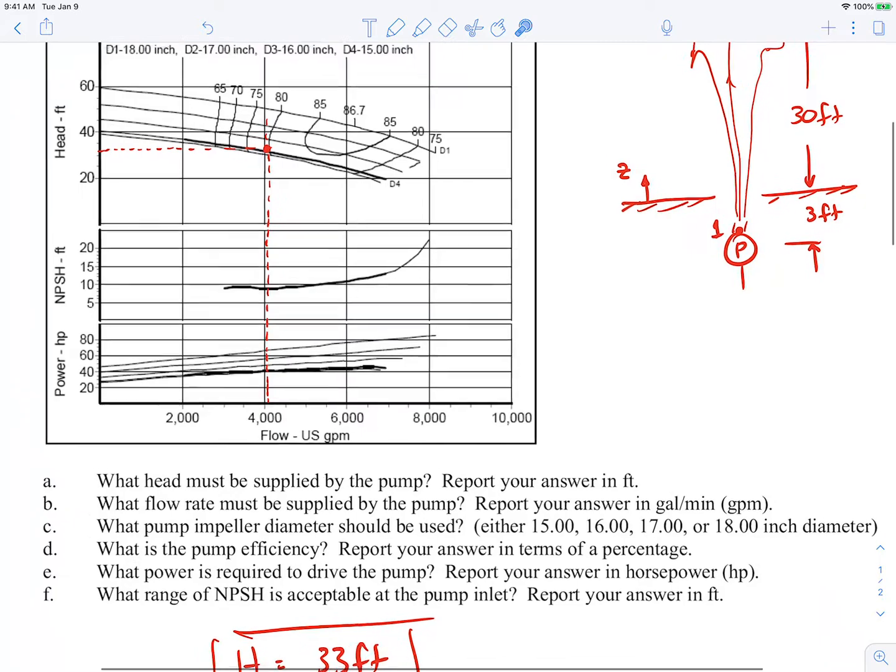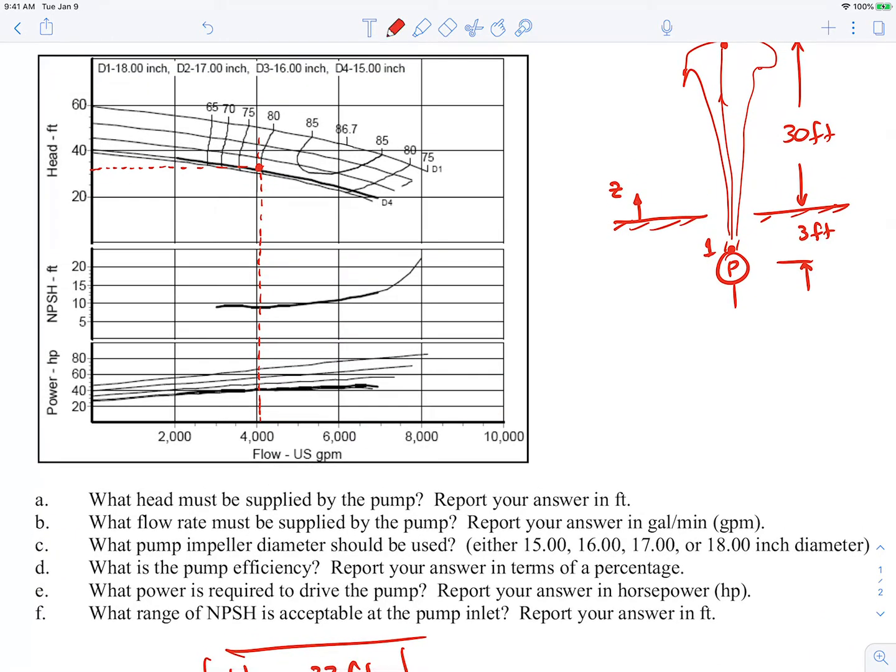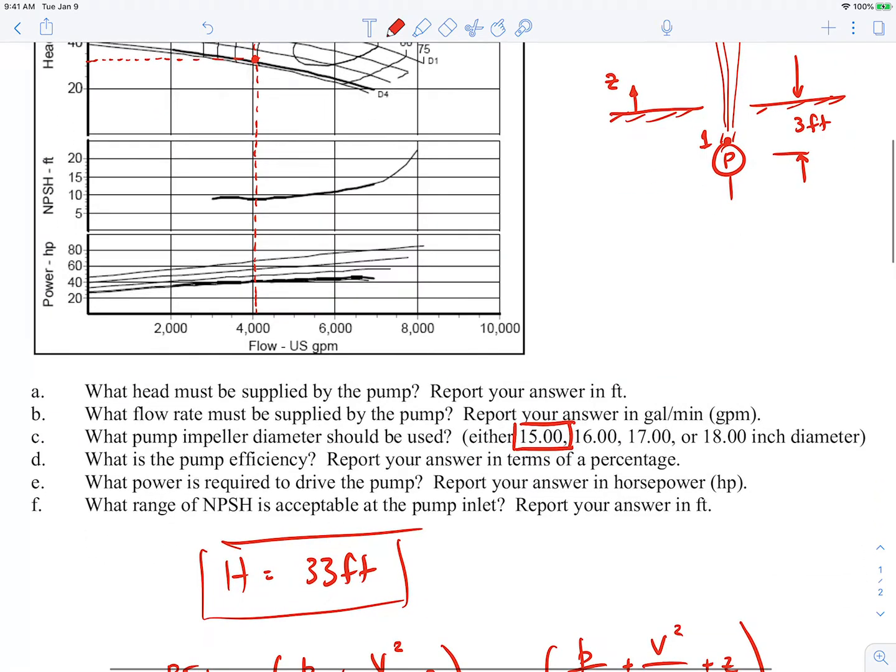So our pump impeller diameter will be the 15 inch one, the D4. So that's the 15 inch pump impeller diameter. What's the pump efficiency under these conditions? Well, if we look at the efficiency curve here, it's about 80% efficiency. So I'll just call it 80% efficiency.